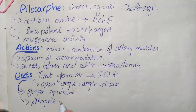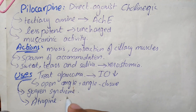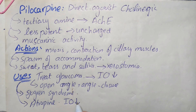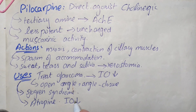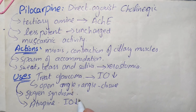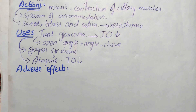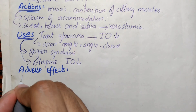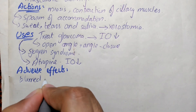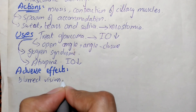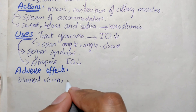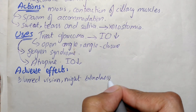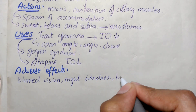It can cause emergency lowering of intraocular pressure, and thereby it can be used in emergency treatment of glaucoma. If we talk about the adverse effects caused by pilocarpine, it can cause blurred vision, night blindness, and brow ache.